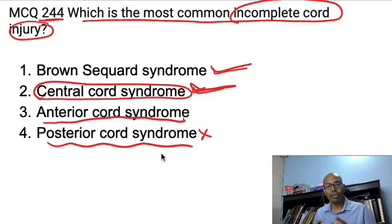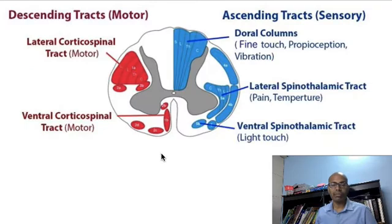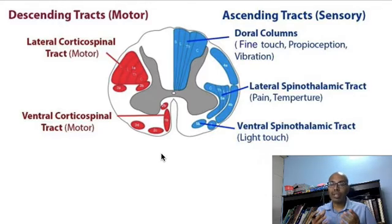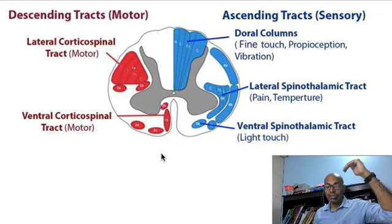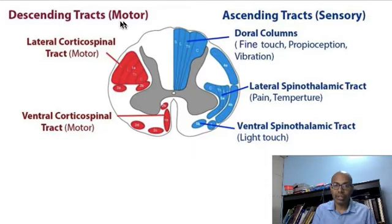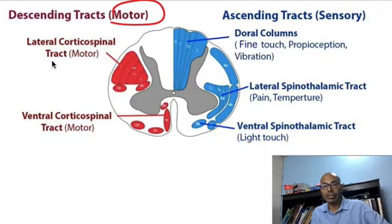Most people got this question wrong — it's not easy, but after this video you'll be better positioned to answer. Let's go to the basic anatomy of the spinal cord, covering the ascending and descending tracts. We need a basic understanding of these tracts to understand the incomplete cord injury syndromes. The descending tracts come from the brain or brainstem down to the muscles — these are the motor tracts. We have the lateral corticospinal tract, which is motor, and the ventral corticospinal tract.